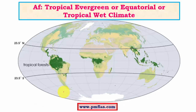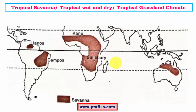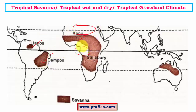The equatorial rainforest type includes the selvas of Amazon, parts of Congo and surrounding regions in Africa, and certain parts of Southeast Asia. Savannah type, also called wet and dry type, includes grasslands like Llanos, Campos, and the Kano grasslands, which are a transition zone between the Sahara desert and the equatorial rainforest. Other savannah grassland regions are present in the northern part of Australia.